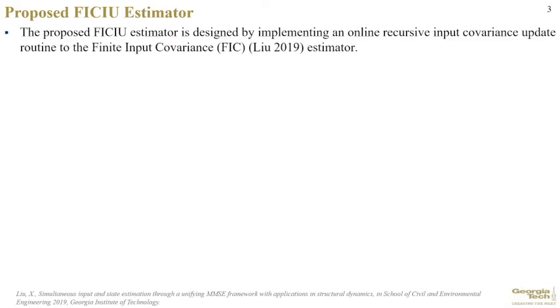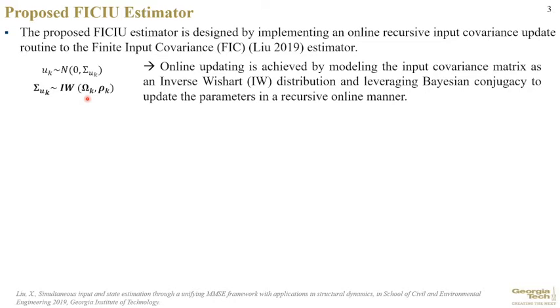For this reason, the proposed FICIU estimator is designed by implementing an online recursive input covariance update routine to the finite input covariance estimator, or FIC, presented in this paper here. The input is modeled as a zero-mean white Gaussian noise distribution with a time-varying input covariance matrix. Furthermore, this input covariance matrix is assigned an inverse Wishart, or IW, distribution. Notice that the IW distribution is parameterized by a matrix parameter omega and a scalar parameter rho. By assigning these prior distributions, we can leverage Bayesian conjugacy to adaptively update the input covariance matrix in a recursive manner, reducing reliance on the initial uncertain input covariance value.